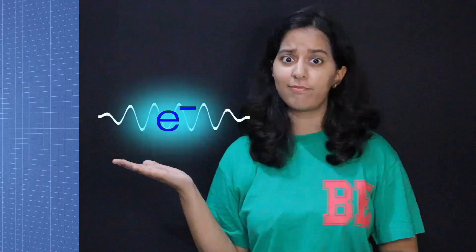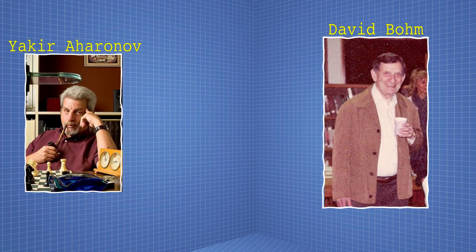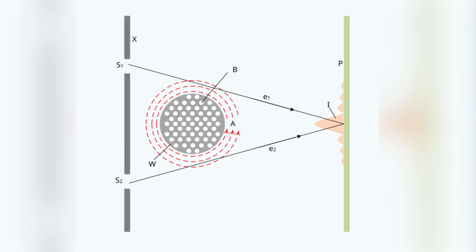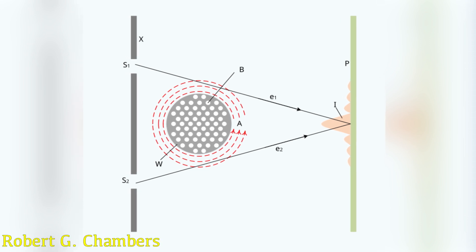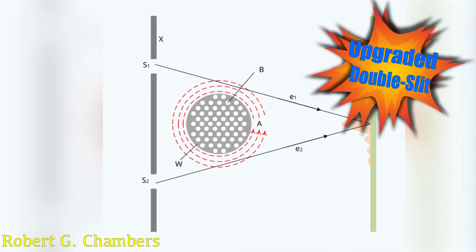Physicists thought for a really long time that this vector potential idea can never really affect physical stuff. But two physicists, David Bohm and Yakir Aharonov, gave a really bizarre idea which was later tested by another physicist, Robert Chambers — an upgraded version of the double slit, if you will.